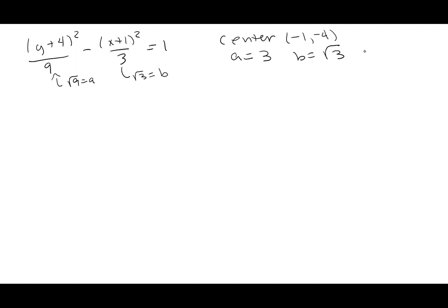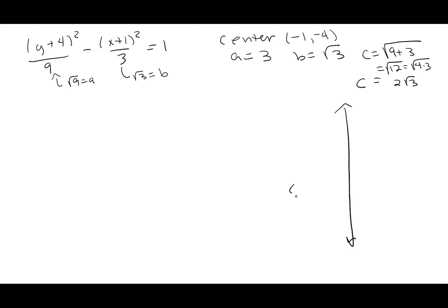For c, we add 9 + 3 = 12 and take the square root. √12 = √(4·3) = 2√3. Now let's think about what's happening and start sketching while we talk through all the points.